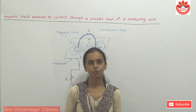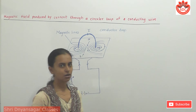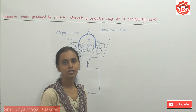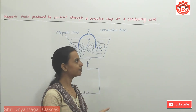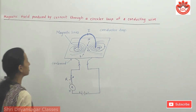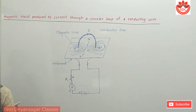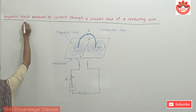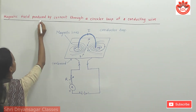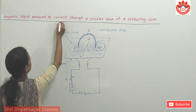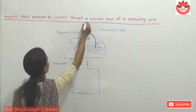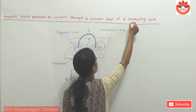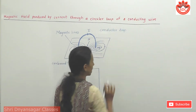The next topic is the right hand rule and the concept of magnetic field produced by current through a circular loop of a conducting wire.